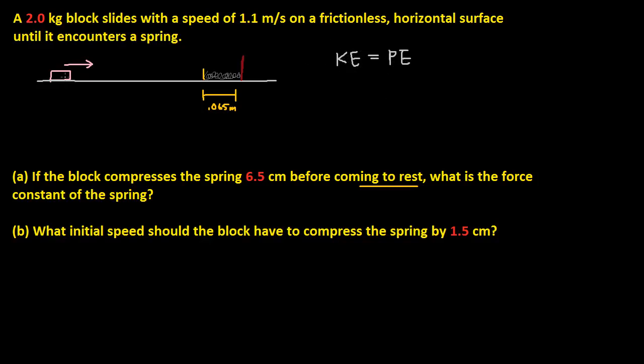So what is the kinetic energy of this object? Well, it's mv squared over 2. And that's the same thing as 2 times 1.1 squared over 2, is equal to potential energy. And what is the spring potential energy? Well, it's kx squared over 2. So one-half kx squared.